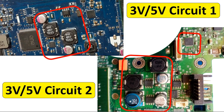If we look at these two motherboards, this is basically the three volt, five volt circuit. Here we have the IC, two inductors — one for three volt and one for five volt — and MOSFETs: two MOSFETs here and two other MOSFETs on the back of the motherboard. We also have a chemical capacitor with a ceramic capacitor, another chemical capacitor, another ceramic capacitor, and the pad.